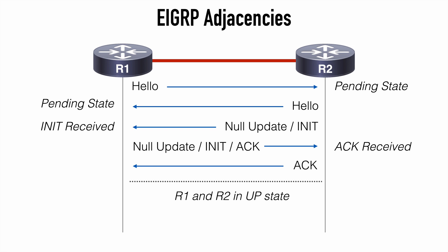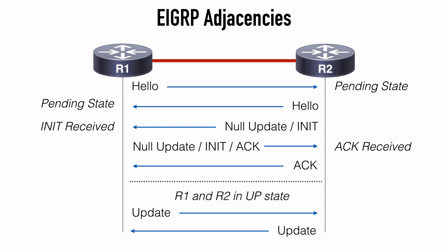The routers are then able to exchange complete routing information using update packets. After synchronization is complete, any time there's a change to routing information, updates are sent out in an incremental format rather than sending a complete copy of the routing database. This update information is recorded to our EIGRP neighbor table, which we can view by running the command show IP EIGRP neighbors.